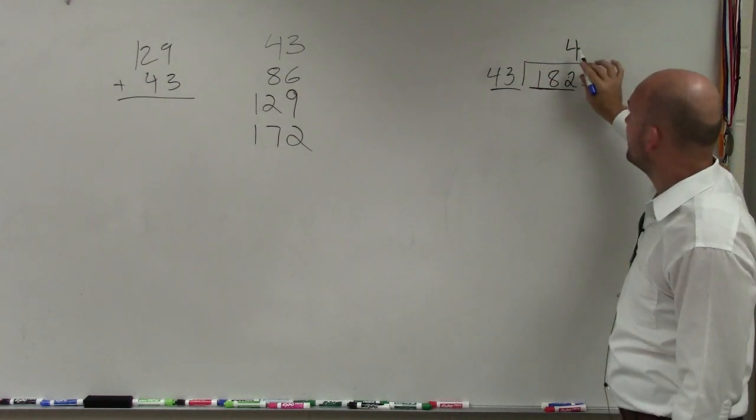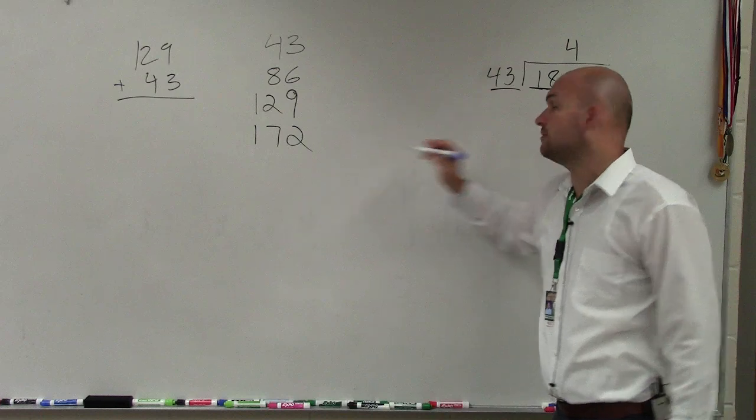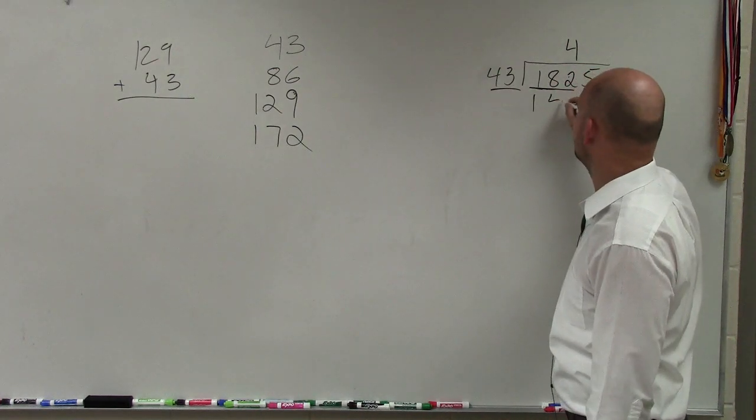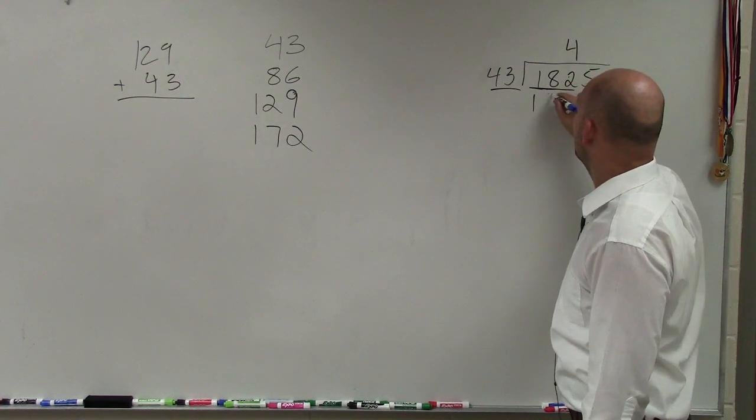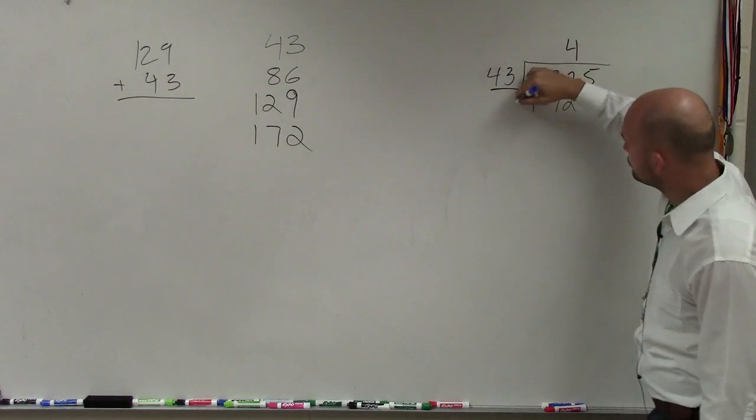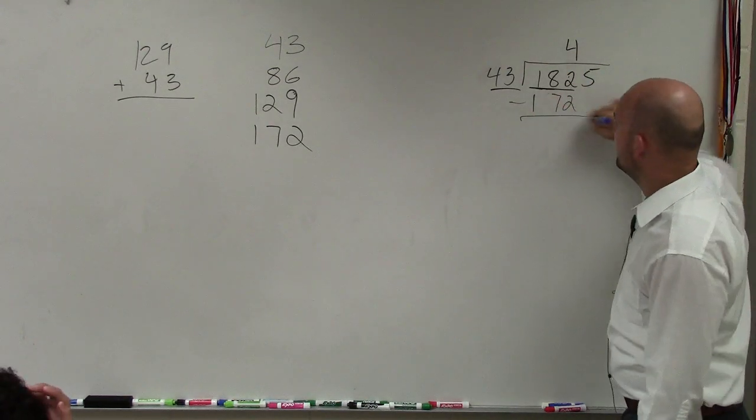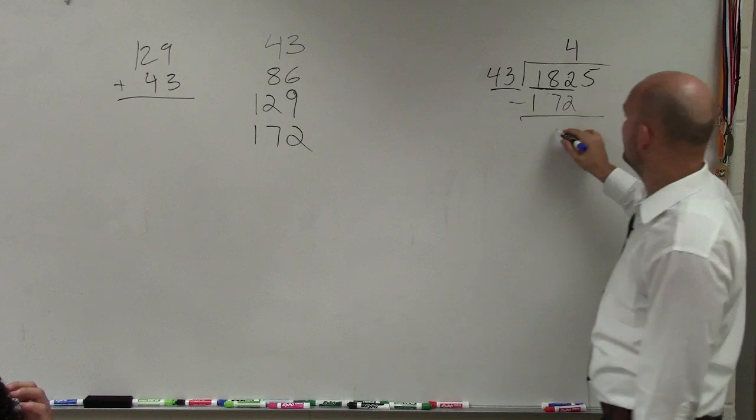Then you multiply 4 times 43. We already know it was 172. So subtract 182 minus 172 is 10.